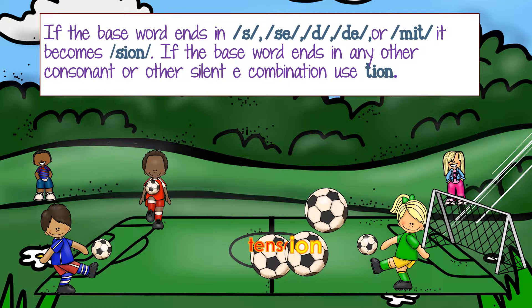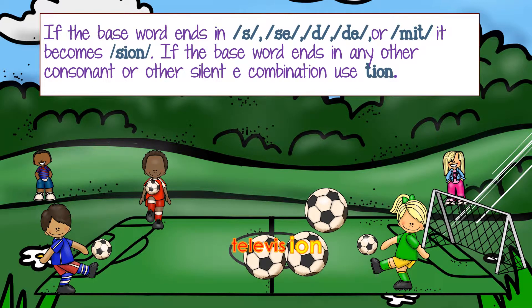Here we have S-I-O-N as the ending. The base word 'televise' becomes 'television.' Televise ends in a silent E, but we take off that silent E when we're adding the suffix I-O-N. I-O-N is a vowel suffix. We take off the silent E and add it to 'televise,' and then it becomes 'television.'